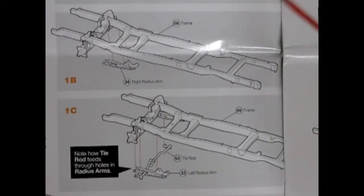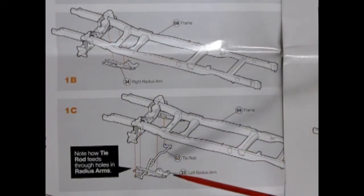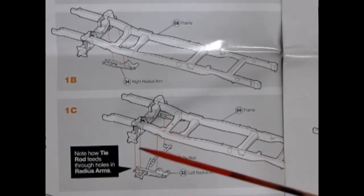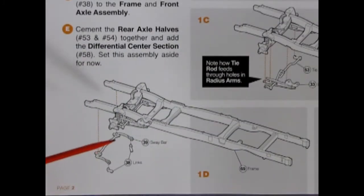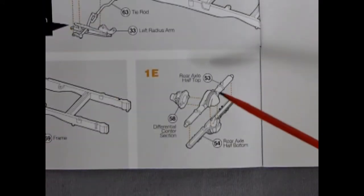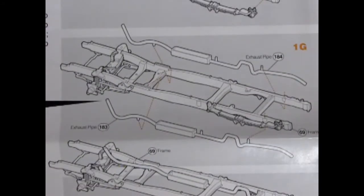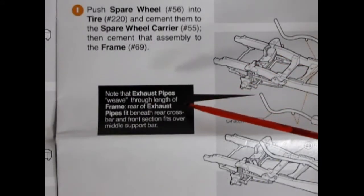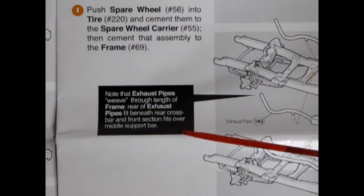Our second panel here shows our right radius arm gluing up onto the frame. And our third panel here shows the tie rod and left radius arm gluing up into the frame. Panel 1D shows our sway bar and our links gluing up underneath onto our frame. While panel 1E shows our three-piece differential all gluing together. In panel 1F we start to glue the rear springs onto our frame. Panel 1G shows our exhaust pipes going up into the frame. Note that exhaust pipes weave through length of frame.